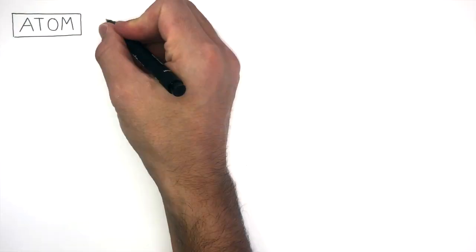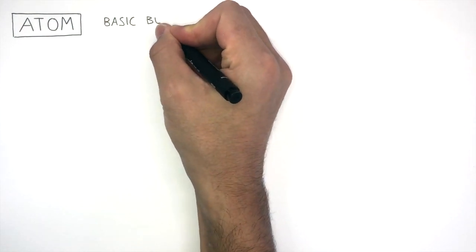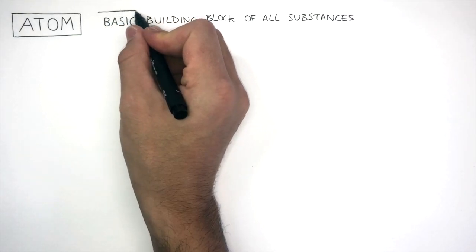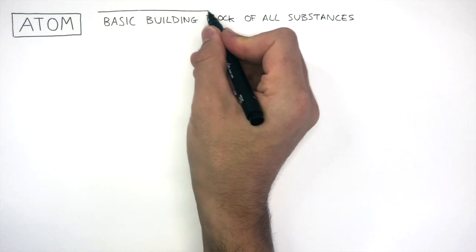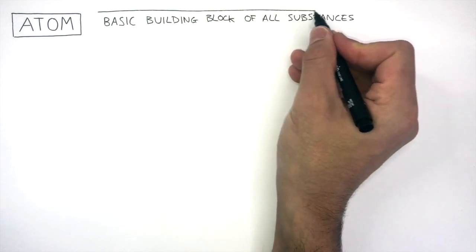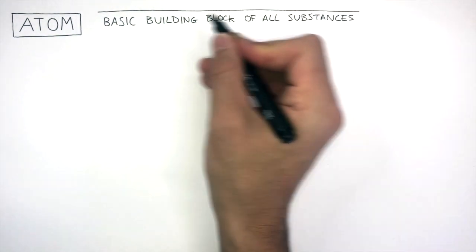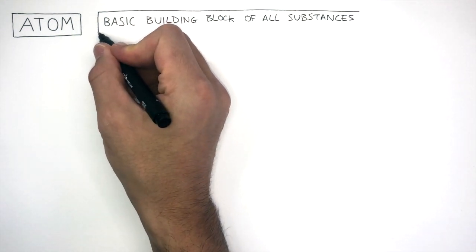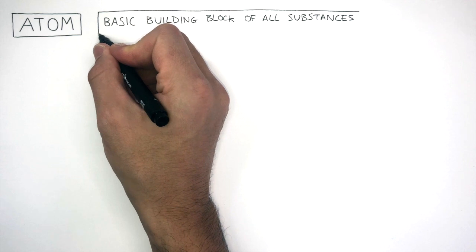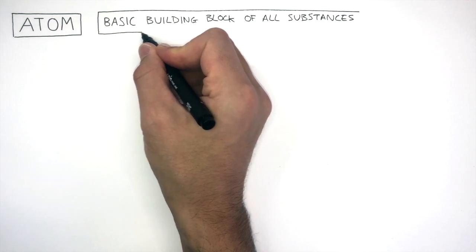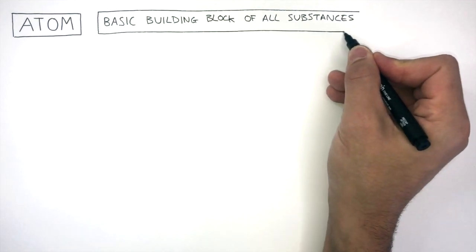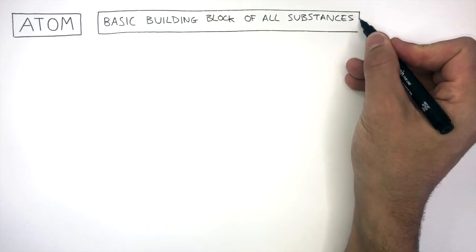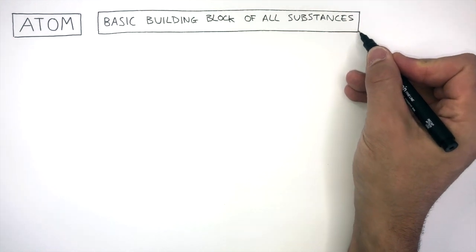An atom is the basic building block of all substances. Every substance is made of atoms, either metallic atoms, non-metal atoms, or both. In this video, we're going to focus on substances made of non-metal atoms.